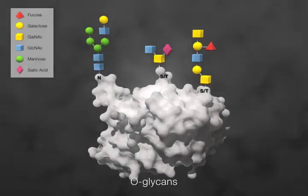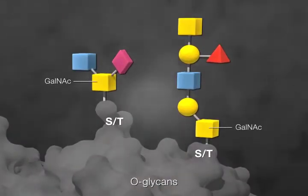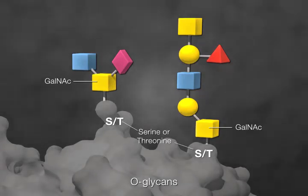O-glycans start with the addition of an N-acetylgalactosamine, or GalNAc, residue to a serine, shown with an S, or threonine, shown with a T.